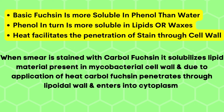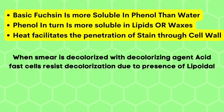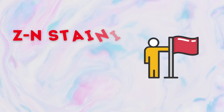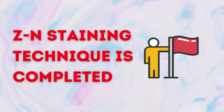The heating process facilitates easy penetration of the stain through the waxy cell wall of mycobacteria. When the smear is stained with carbol fuchsin, it gets solubilized in the lipid material in the mycobacterial cell wall, and due to the heat, carbol fuchsin penetrates through the lipid wall and enters the cytoplasm, staining the bacteria pink. When decolorized, acid fast cells resist decolorization due to lipoidal material in the cell wall, while non-acid fast bacteria are decolorized and take the counter stain methylene blue, appearing blue. So acid fast structures retain the primary stain and appear pink, while non-acid fast bacteria lose the primary stain and appear blue. This completes the Ziehl-Neelsen staining technique.